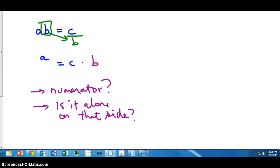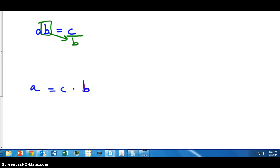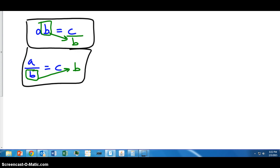So, the b over b cancels out. And on the right side now, we have c times b. So, what did we start out with? We started out with a over b equals c, and then we isolated a by bringing b to the right from the left. And when we brought b to the right, it went from denominator to numerator. So, we have now two rules, which are really just one rule. Whenever you want to remove b from one side and get it to the other side, it will always change from numerator to denominator, or from denominator to numerator.